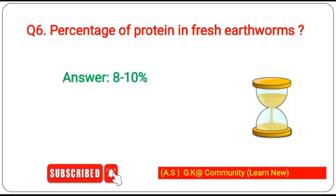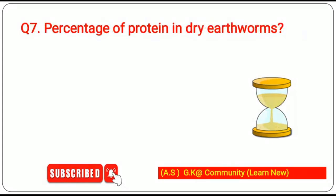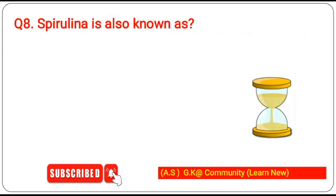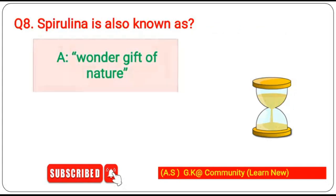Sixth question: what is the percentage of protein in fresh earthworms? The answer is 8 to 10%. The percentage of protein in dry earthworms is 56 to 66%.